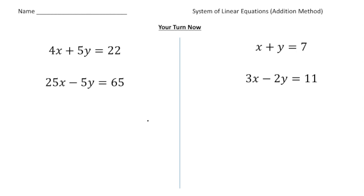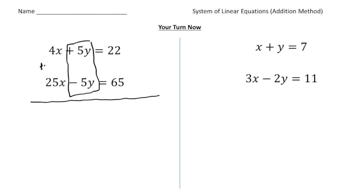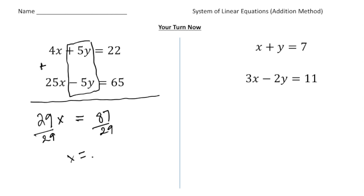Welcome back. Let's see how you did with these addition problems. The first one: 4x plus 5y equals 22, and 25x minus 5y equals 65. Notice we have a nice set of opposites — 5y and negative 5y. When we add these together, 4x and 25x gives us 29x. The 5y and negative 5y cancel out. Adding 22 and 65 gives us 87. So 29x equals 87. Dividing both sides by 29, we get x equals 3.